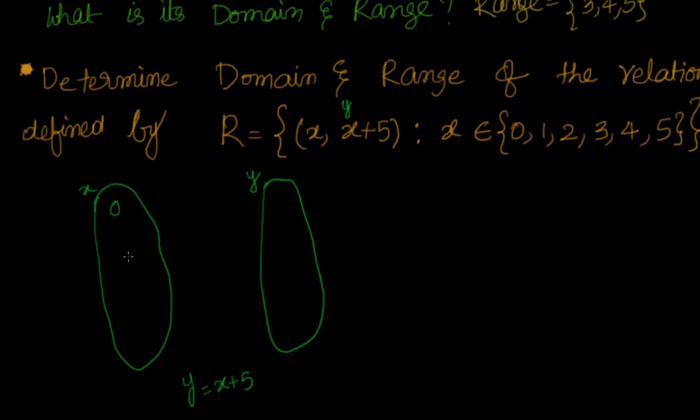0. x belongs to {0, 1, 2, 3, 4, 5}. Now there are no constraints on y other than that y should be x + 5. So if I have 0, it should be 5. If I have 1, it will be 6. 2 will be 7, 3 will be 8, 4 will be 9, and 5 will be 10.